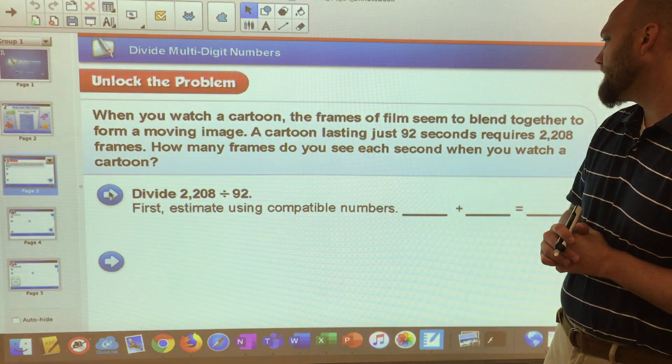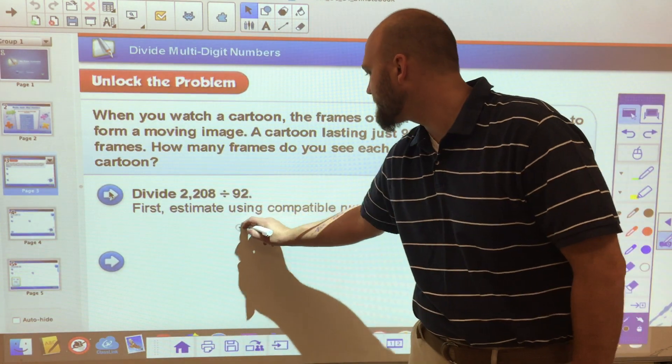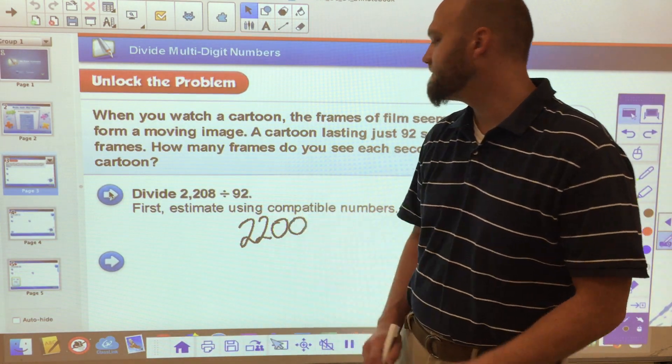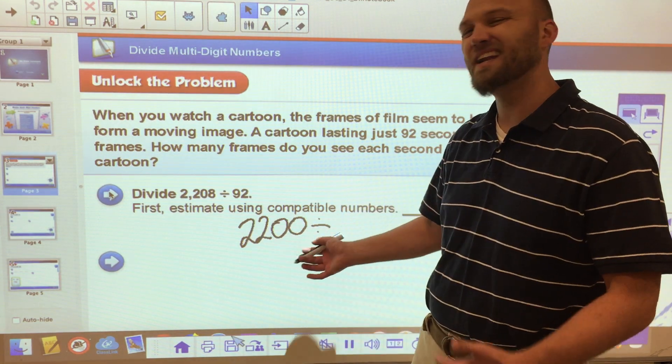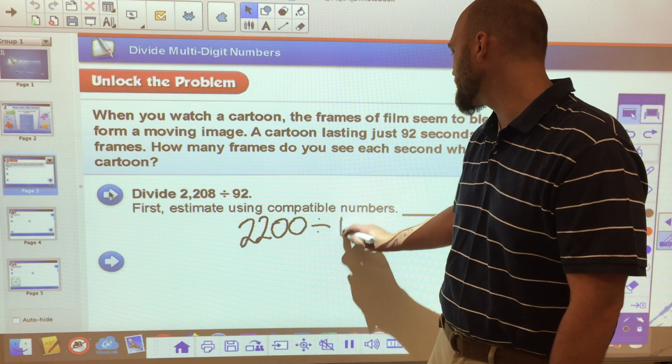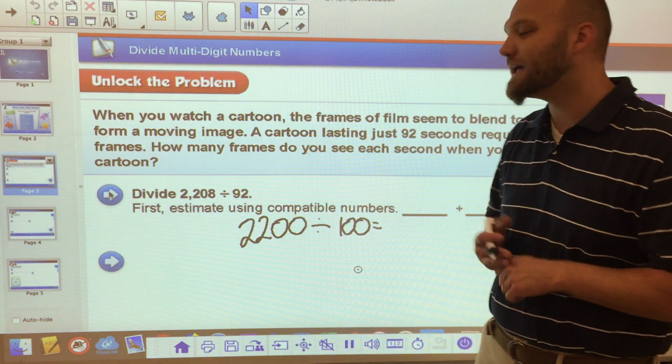So let's start with, if we would take these and we'd say 2,200, and we're going to divide that by 92. That's pretty close to 100. And when I divide those two, whether I have a calculator or I can do it in my head...